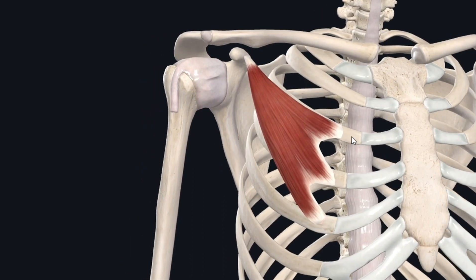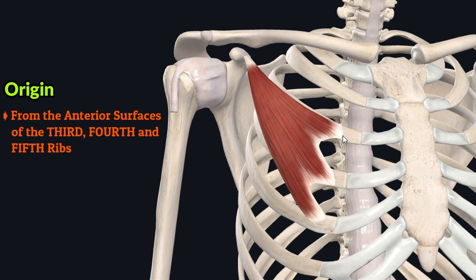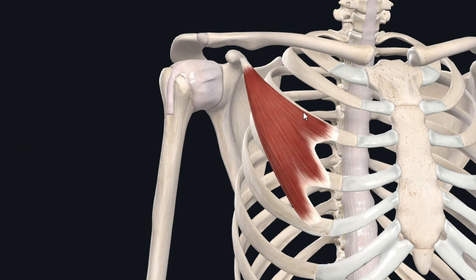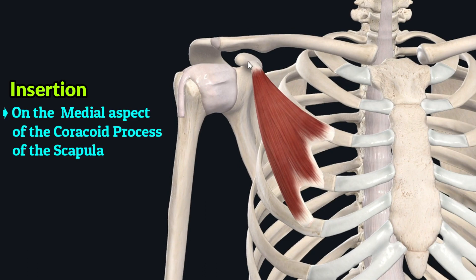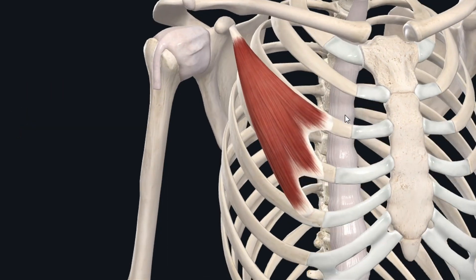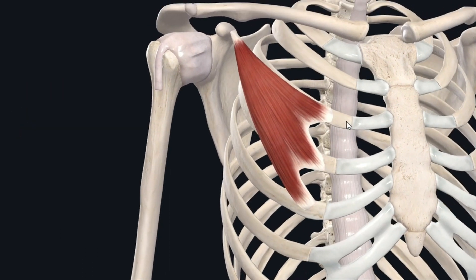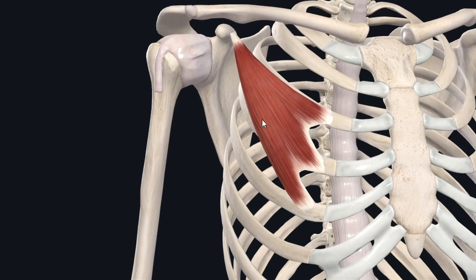Looking at the origin and insertion points, the pectoralis minor muscle originates from the anterior surfaces of the third, fourth, and fifth ribs, just near or lateral to the costochondral junctions. This muscle inserts on the medial side of the coracoid process of the scapula.